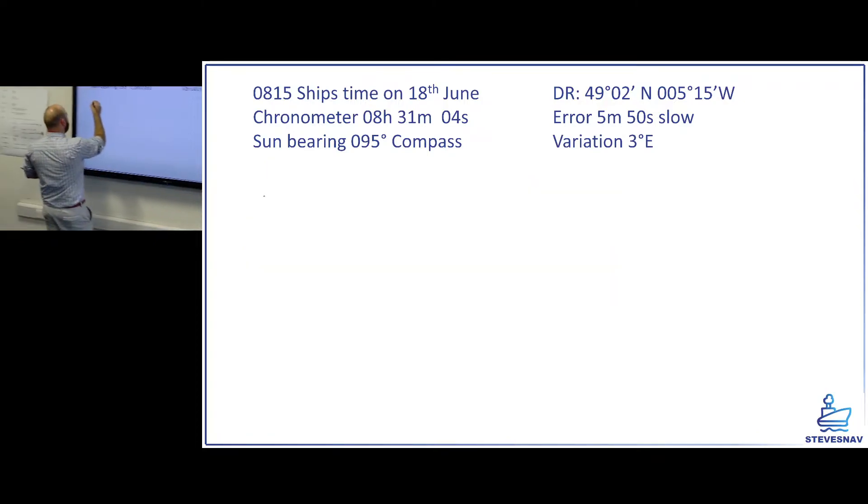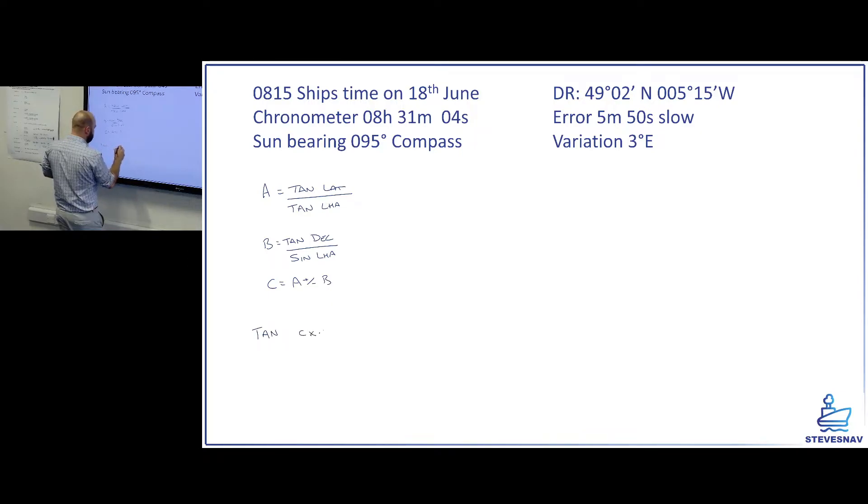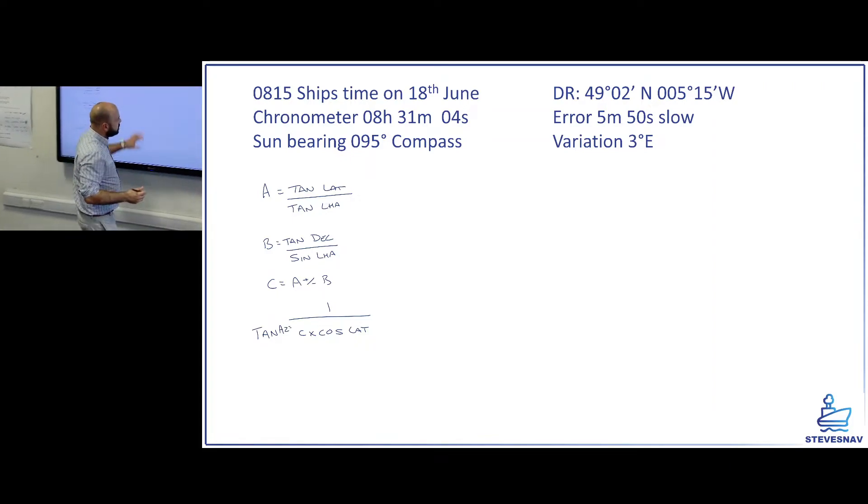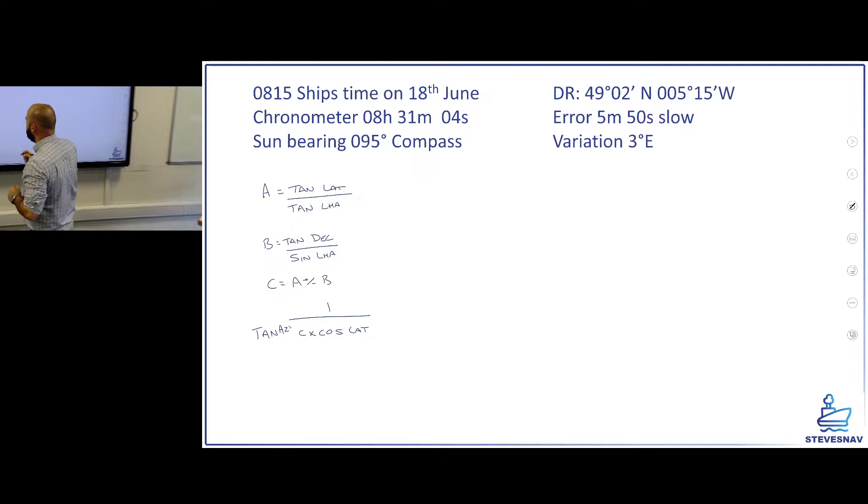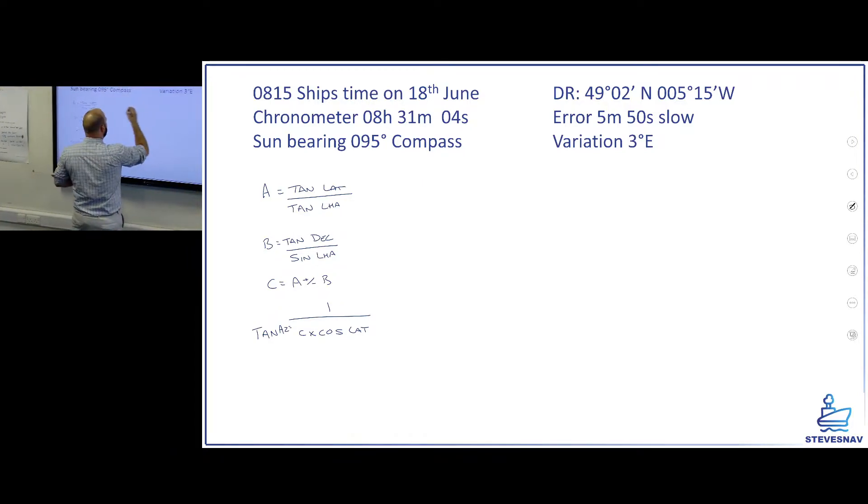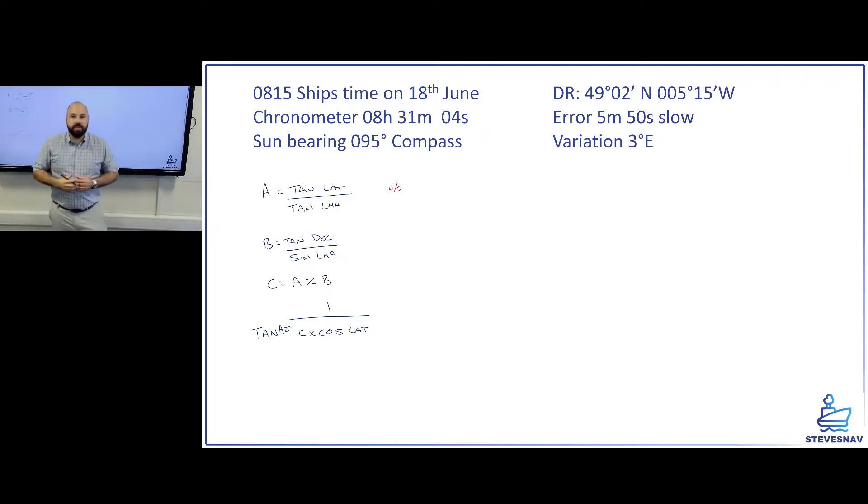Now, A was tan lat over tan LHA. B was tan dec over sin LHA. And C is A plus or minus B. And then the tan of the azimuth is that times the cosine of the latitude. And it's 1 divided by all of it. So the tan of the azimuth is that. Now there are some rules for this. A has to be named North or South. And that is going to be based on whether the LHA is between or outside of 090° to 270°. Norris, for reasons known only to Mr. Norris, says it's named opposite to the latitude, except when LHA is 090° to 270°. In other words, if LHA is between 090° and 270°, it's the same as latitude.